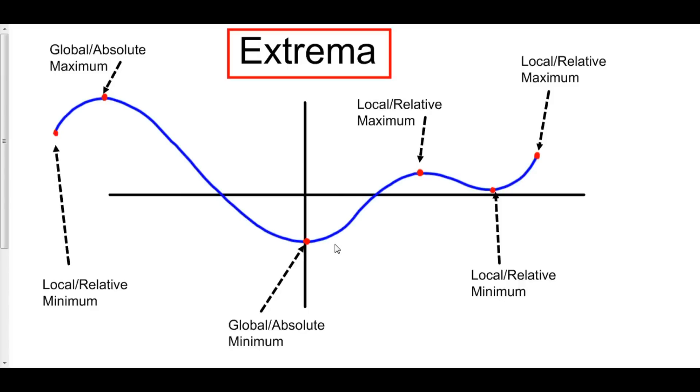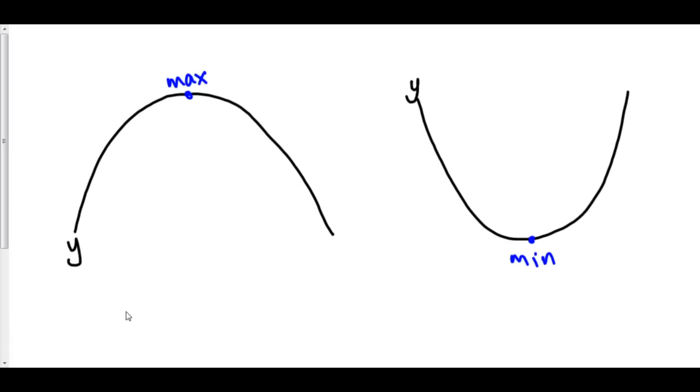Now the question is, how do we know whether a point is an extremum? Well, it's very simple. Right here, on this hill, we have a local max. In this valley, we have a local min.